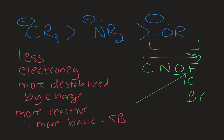In this series, this CR3- derivative is going to be a very, very strong base. Carbon is less electronegative than oxygen and nitrogen, so it's going to be more destabilized by that negative charge. It does not have a high affinity for electrons, and so because it's less stable, it's more reactive.